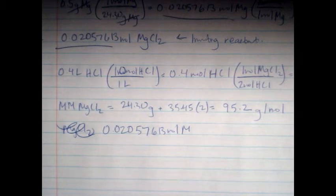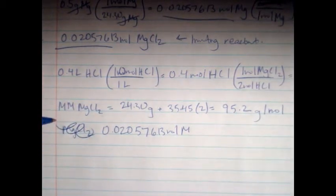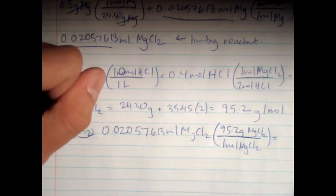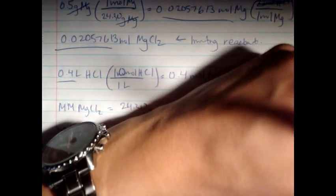So all you have to do is 0.02057613 mols of MgCl2. And then the molar mass is one mol of MgCl2 per 95.2 grams MgCl2. So, it gives me 1.9588, but I have sig figs, and we're using two sig figs. So basically, 2.0 grams of MgCl2.